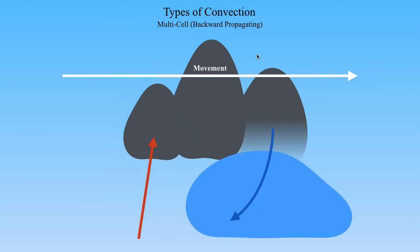In a backward propagating multicell, the cold pool and the individual cell motions are moving in opposite directions — the thunderstorm moves left to right but the cold pool moves right to left. A lot of times, a backward propagating multicell can produce a substantial flash flooding threat because these typically don't move very fast; the cold pool continually triggers thunderstorm activity over the same area. A forward propagating multicell can also produce heavy rain, though it's primarily a straight-line wind damage concern. If your thunderstorm and cold pool are moving in opposite directions, that poses more of a flash flooding risk.